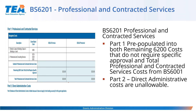Hello, this is Tammy Michaels from the Grants Administration Division. The next budget schedule is the BS6201 Professional and Contracted Services schedule, which has three parts. Direct administrative costs are unallowable in this grant, so we will not do anything with Part 2. This is true for the entire SPED application — anytime you see the Direct Administrative Cost Schedule in the SPED application, you may ignore it.